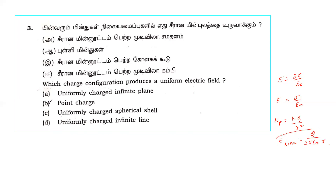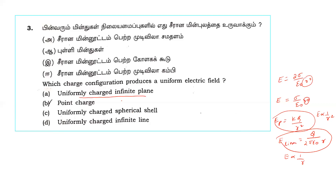The electric field of a line charge varies inversely proportional to R, and for a point charge inversely proportional to R squared. For the charged infinite plane sheet, the field is proportional to R to the power zero — meaning it is uniform. Therefore, the uniformly charged infinite plane sheet produces a uniform electric field.